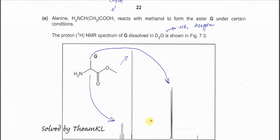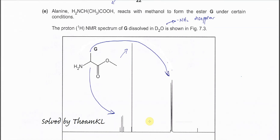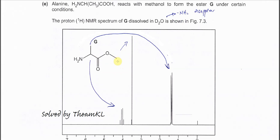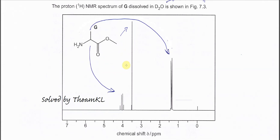Part E: the proton NMR spectrum of compound G dissolved in D2O. When dissolved in D2O, the NH2 peak disappears because it undergoes proton exchange — the H exchanges with D from D2O and gives no signal. So only three signals are shown: the CH3 next to oxygen forms a singlet around 3-point-something ppm, and another CH3 adjacent to an alkyl group forms a doublet around 1-point-something ppm.